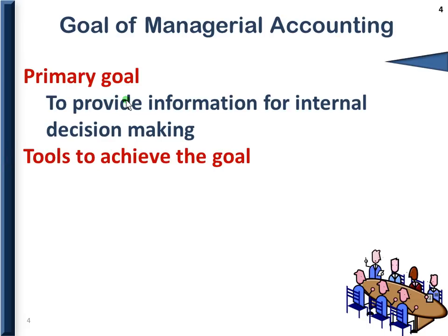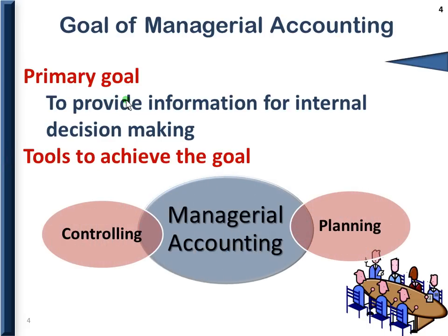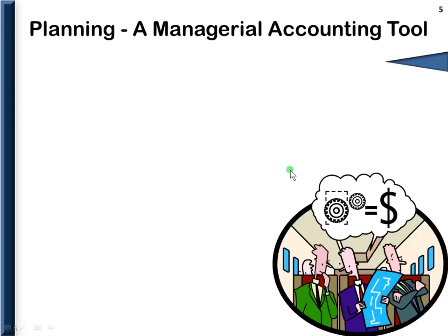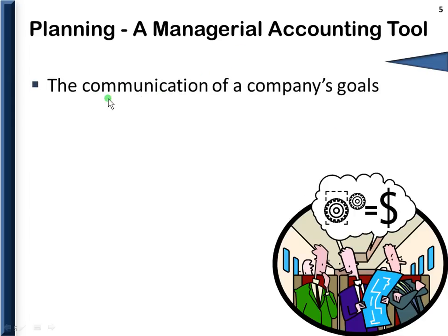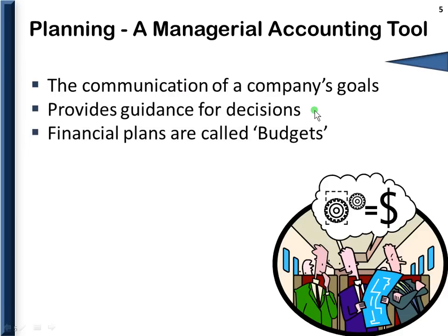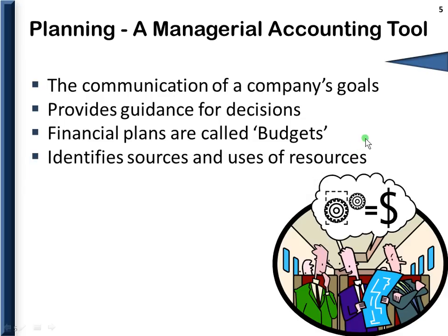There are two tools that accountants use to achieve this: controlling and planning. We start with planning because before you can control, you have to go through the planning process. Planning is a managerial accounting tool and it's the way managers communicate with employees or lower-level managers. It communicates the company's ultimate goals and helps managers make decisions. Financial plans are called budgets. As college students, you've had to budget — whether for meals each week or using a financial aid check to cover living expenses, tuition, and textbooks. Planning also helps identify the sources and uses of resources, which are also known as assets.